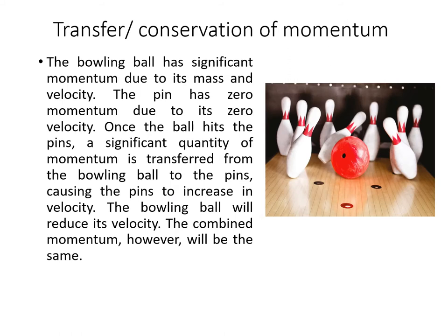A more sporting example is ten-pin bowling: conservation of momentum occurs in the collision between the bowling ball and the skittles. The skittles start with zero velocity and therefore zero momentum, while the bowling ball moves with quite a head of steam — decent momentum from its mass and velocity. When it strikes the pins, there is an exchange such that the numbers would be constant in that collision — a transference or conservation of momentum from the bowling ball to the skittles.